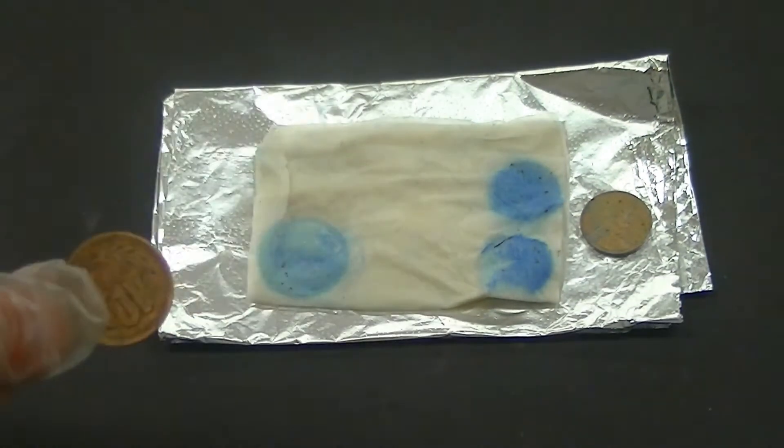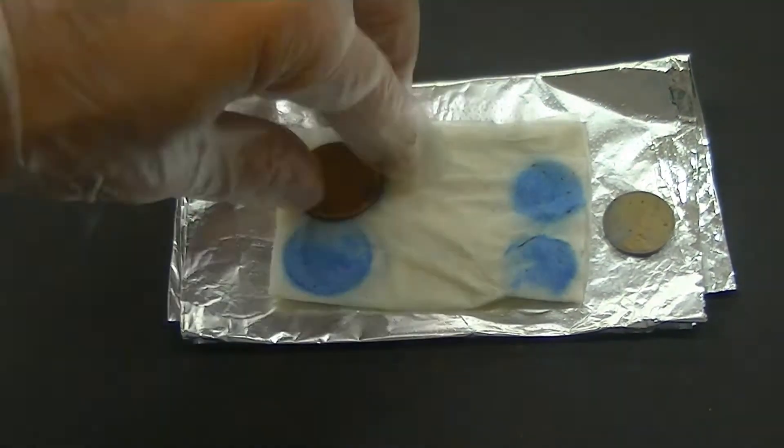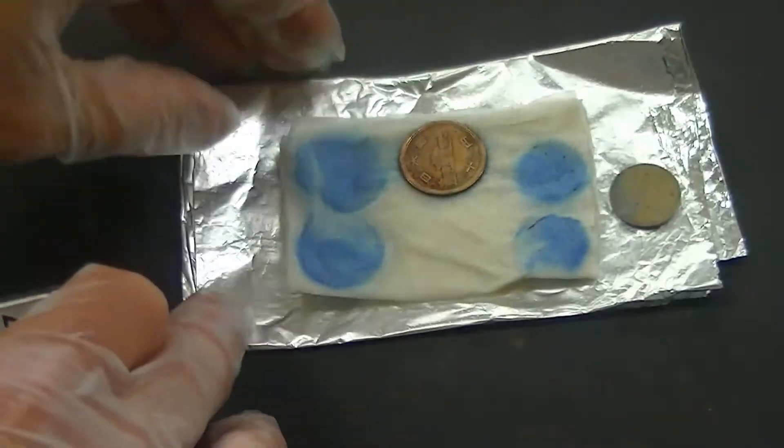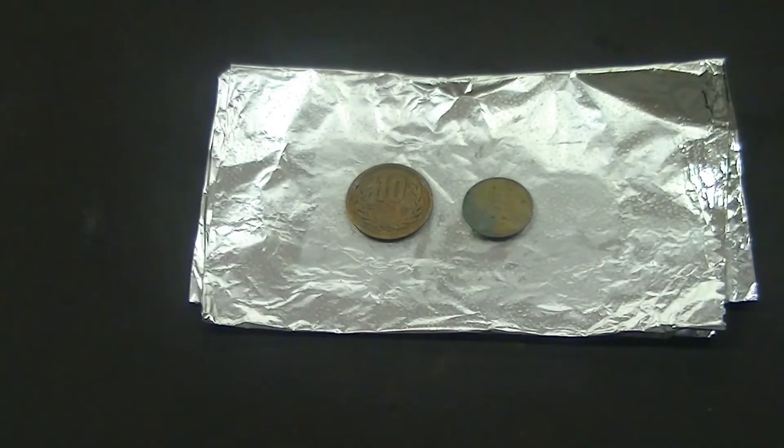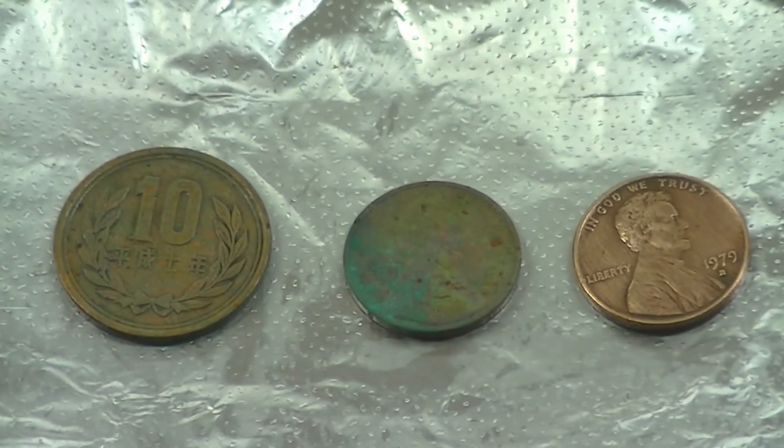If you look closely, you can see that a patina is slowly developing on the surface of the smaller coin. Now that we've treated each coin, let's watch what happens as they react with components in the air. We'll place a shiny copper coin nearby for comparison.